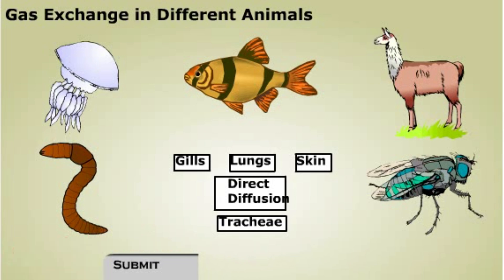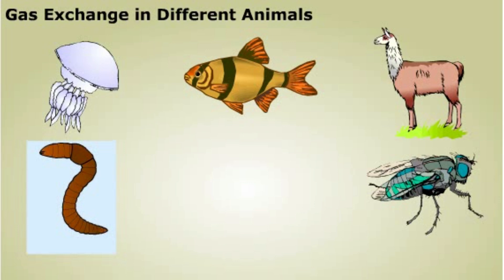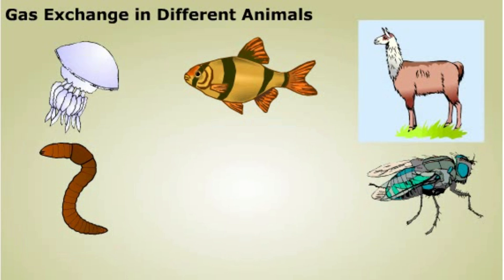Simple multicellular organisms, such as jellyfish, don't have respiratory structures. They exchange gases by direct diffusion between their cells and the surrounding water. Some larger invertebrates, such as earthworms, exchange gases through the skin. Insects have a system of tracheae that open to the exterior; gas exchange takes place through these tubes. Most marine and freshwater animals, such as fish, exchange gases through gills. Land animals like reptiles, birds, and mammals exchange gases through lungs.